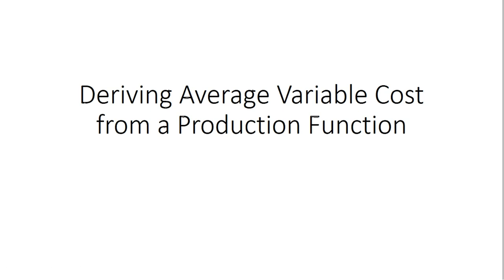In this video we're going to derive an average variable cost curve from a firm's production function. We've got a basic short-run production function here where output is a function of units of labor. Capital is fixed in the short run.